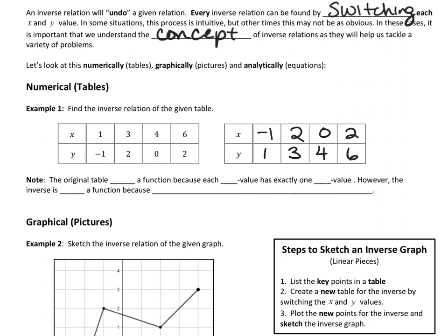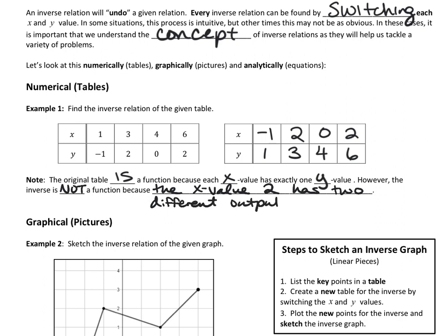Here's something important to note. Talking about whether a relation is a function — what cannot repeat? The input values. Your x's cannot repeat. Our original table is a function because none of these x values repeat; each x value has exactly one y value. However, look at the table we wrote for the inverse. Is this one a function? No, because the x value of 2 has two different output values — an output value of 6 and an output value of 3.